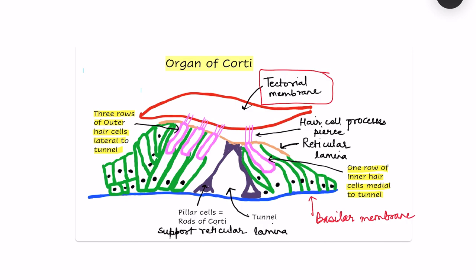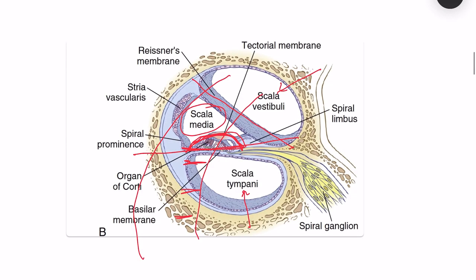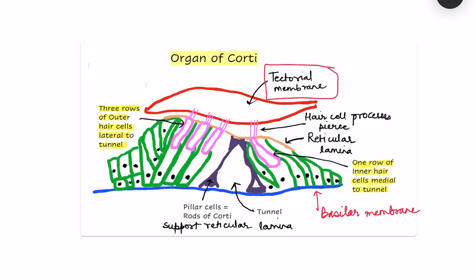Going back to the previous diagram, you can see Reissner's membrane here. The top portion of the organ of Corti is not touching Reissner's membrane — there is another membrane there, which is the tectorial membrane. So in our detailed diagram, at the bottom there is the basilar membrane and at the top there is the tectorial membrane.